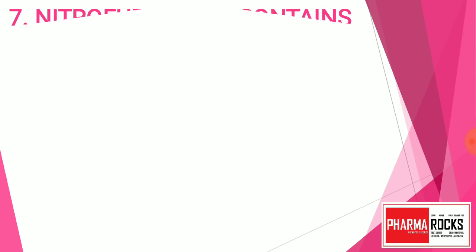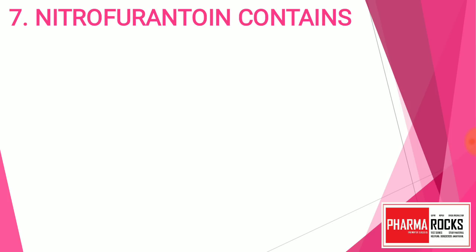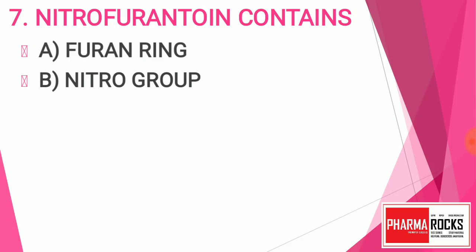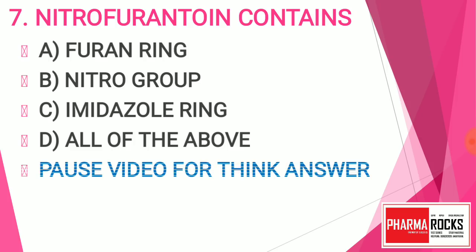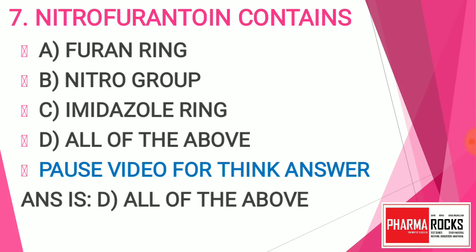Now go to question number seven: Nitrofurantoin contains which rings? You have the options: furan, nitro, imidazole, and all of the above. The answer is D — all of the above. Nitrofurantoin contains all the rings given: the furan ring, the nitro group, and the imidazole ring — all three are present in nitrofurantoin.